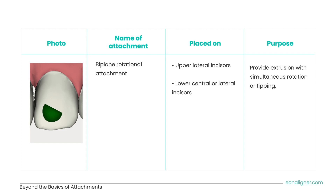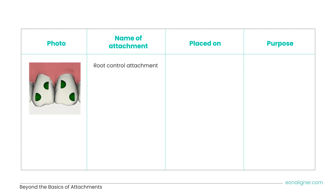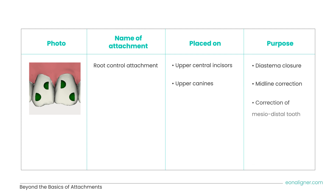Last is the root control attachment, which consists of two half-elliptical attachments that provide two active surfaces for force application. This prevents tipping movements and achieves better control of root position during mesiodistal movements. It is usually placed on upper central incisors and upper canines, used in cases of diastema closure, midline correction, and mesiodistal tooth angulation correction. Their function is similar to vertical attachments on anterior teeth, but root control attachments are more aesthetic, substituting vertical ones on anterior teeth.